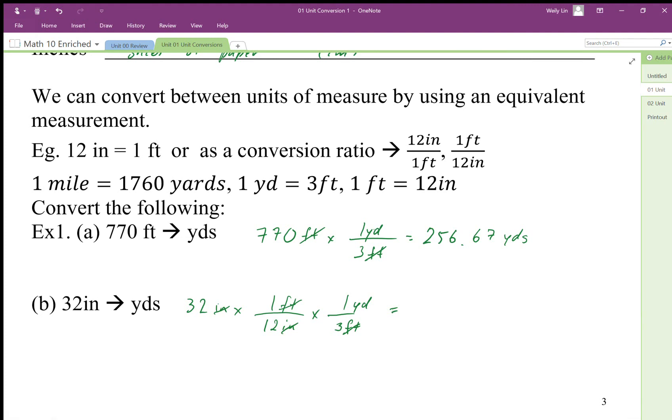When I do this calculation, I'm going to do 32 times on top, divide on bottom. So it's going to be divided by 12, divided by 3.